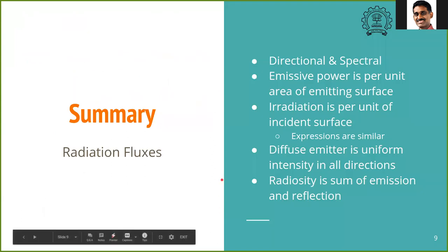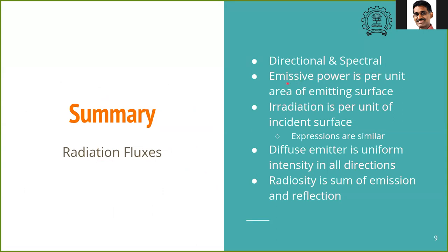To summarize: radiation fluxes have two important properties — directional and spectral. The emissive power is per unit area of the emitting surface, and irradiation is per unit area of the incident surface; aside from this difference, the expressions look similar. A diffuse emitter is one with uniform intensity in all directions. We have also introduced a new term in this lecture: radiosity, which is the sum of emission and reflection.